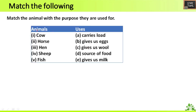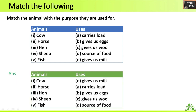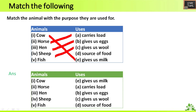Next, match the animal with the purpose they are used for. Cow gives milk. Horse carries load. Hen gives us eggs. Sheep gives us wool. Fish is a source of food.